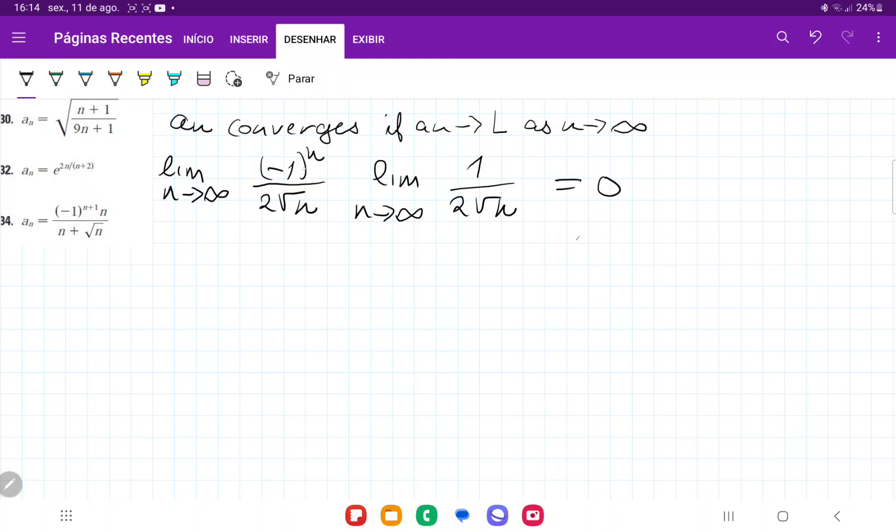it doesn't matter whether the top part is positive or negative. Negative 1 times 0 is still 0, and positive 1 times 0 is still 0. Because the limit as n approaches infinity of the absolute value of a_n equals 0, then the limit as n approaches infinity of a_n is also equal to 0.